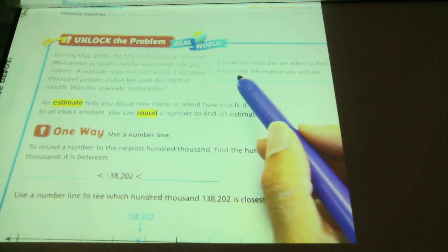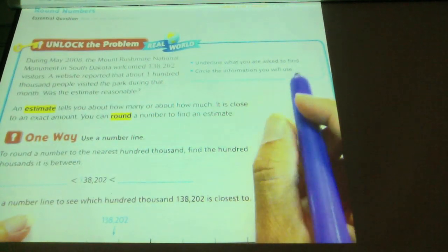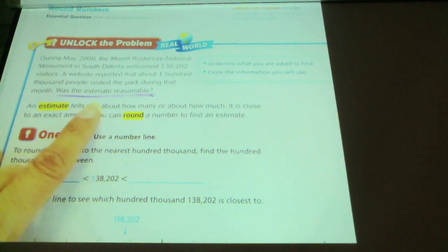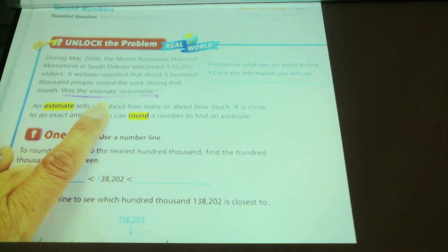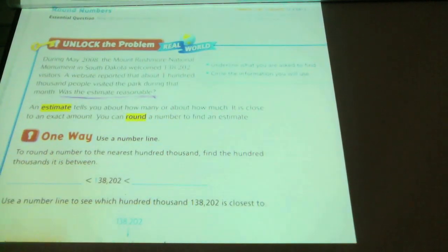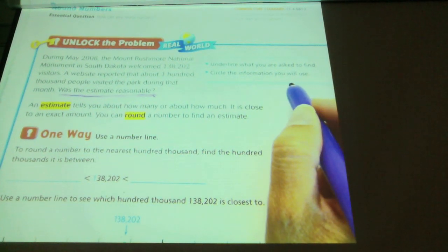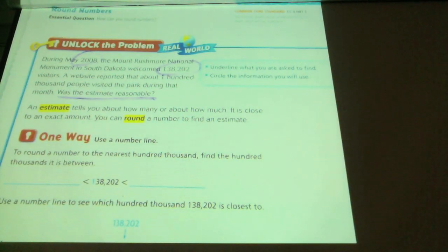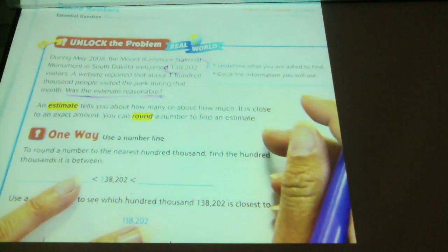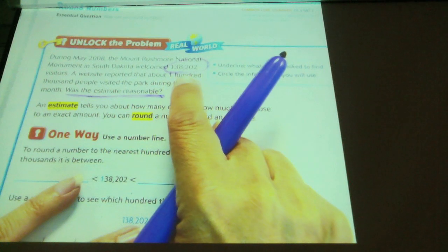So let's go through the skills that it's telling us to work on here. Underline what you're asked to find. I want you to look back in the question. What is it asking you to find? And here the question is, was the estimate reasonable? So we're going to do some rounding, and your answer is not going to be the number. It's going to be yes or no. It was or was not reasonable. So circle the information we're going to use. Well, I see some numbers in there. Should I just circle all the numbers? So let's go back to what I'm talking about here. First of all, 2008, is that important? No. This number is not necessary.